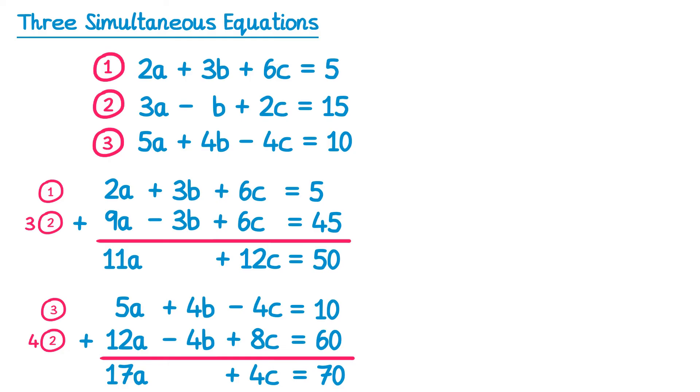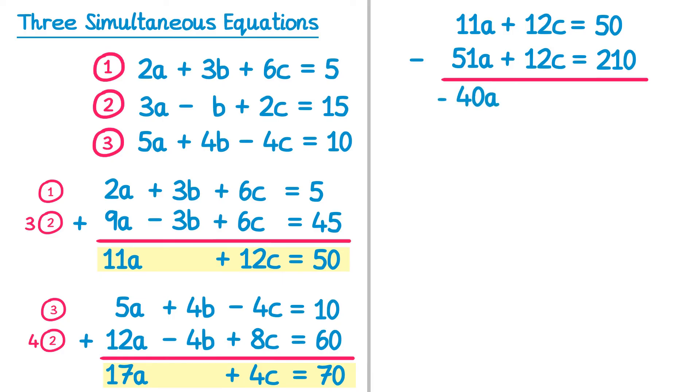So I now have two equations with two unknowns, you notice there's no b in these, so we can solve these using the normal method. I'm going to eliminate c here, so what I'll do is multiply the second equation by 3, so 17a times 3 is 51a, and 4c times 3 is 12c, and 70 times 3 is 210. Now I can subtract the equations to eliminate c, so 11a take away 51a is negative 40a, 12c take 12c is 0, and 50 take 210 is negative 160. If you divide both sides of this by negative 40, you'll get a equals 4. So we've got our first part of the solution.